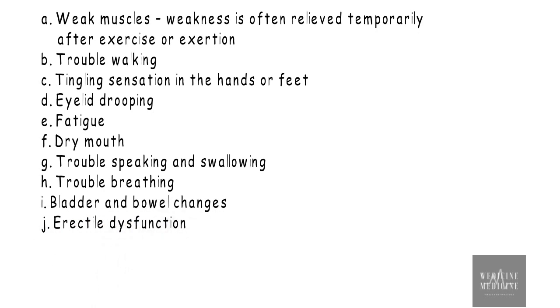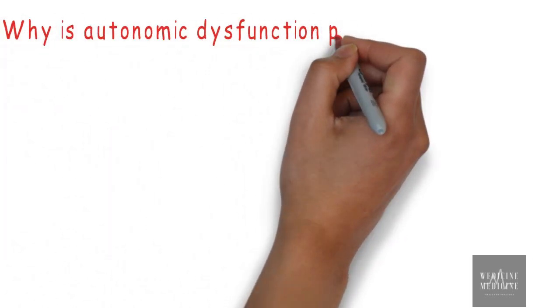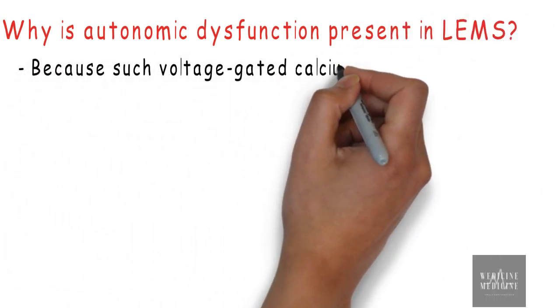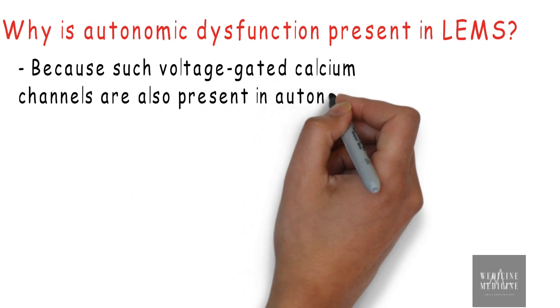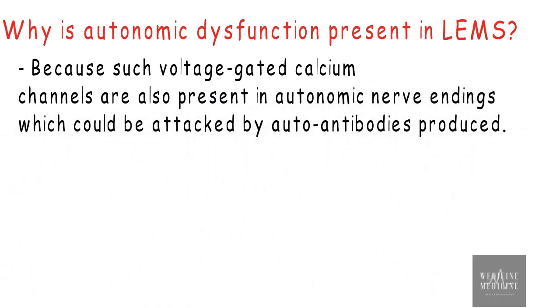You can take a moment to note all the points from here. One question that needs to be answered is, why is autonomic dysfunction present in this syndrome? It is because such voltage-gated calcium channels are also present in autonomic nerve endings, which could be attacked by auto-antibodies produced.